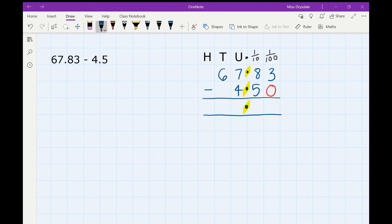So let's just go ahead and subtract. 3 subtract 0 is 3, 8 subtract 5 is 3, 7 subtract 4 is also 3, and then 6 subtract 0 (we've got a gap there, that's just a 0) is 6. So your answer is 63.33.